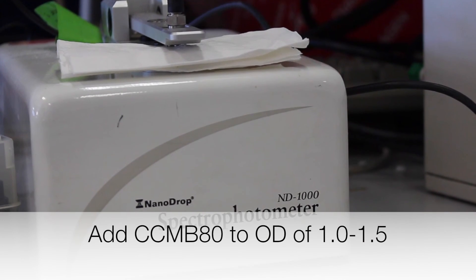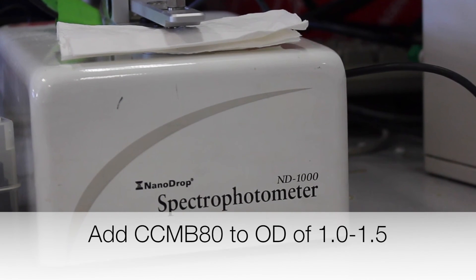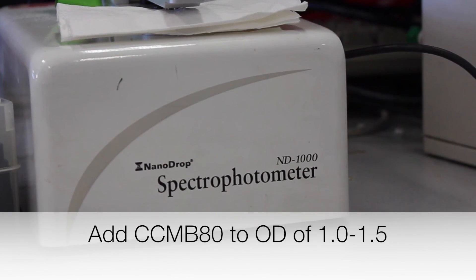Add chilled CCMB-80 to yield a final optical density of 1 to 1.5 in this test.